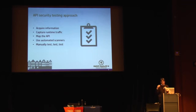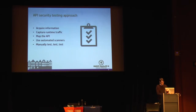List out all the various methods the API is calling and start to think about what other types of methods might not be listed. As you get into testing, use a number of automated tools and then manually test. I'll go through a lot of items to consider while evaluating your APIs.